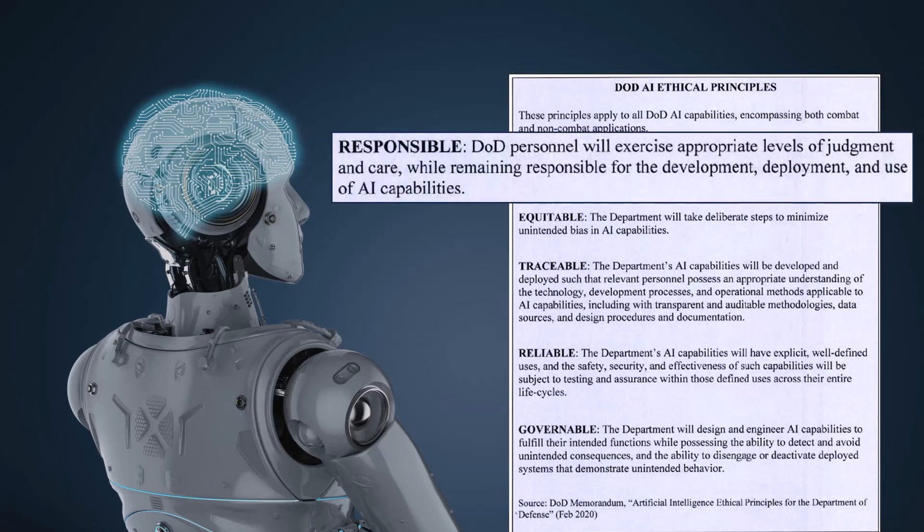So the first principle is the responsible principle. This primarily has to do with the humans that are using the technology, to ensure that the people are using the appropriate level of judgment, development, deployment, use of the capability. They understand AI, they understand how it was developed, they understand its weaknesses and its strengths. Is AI the right tool for the job? And if they deem it to be the right tool for the job, are they ensuring it can be used safely and that it functions the way it was intended to function? And it also means those humans are going to be held accountable for the way AI is developed and the way AI is used.